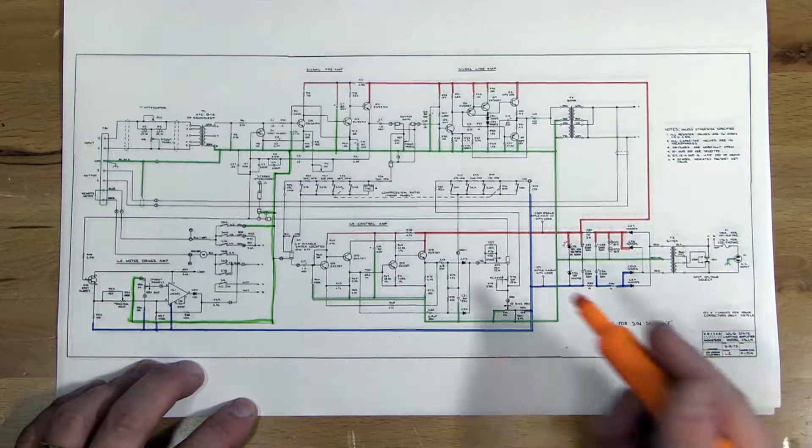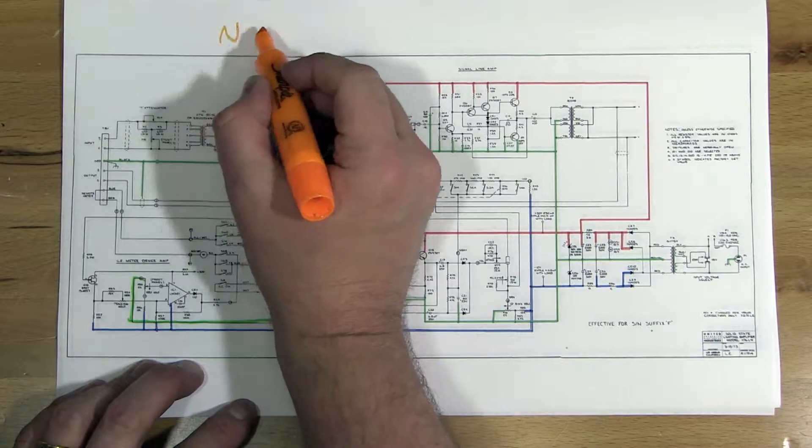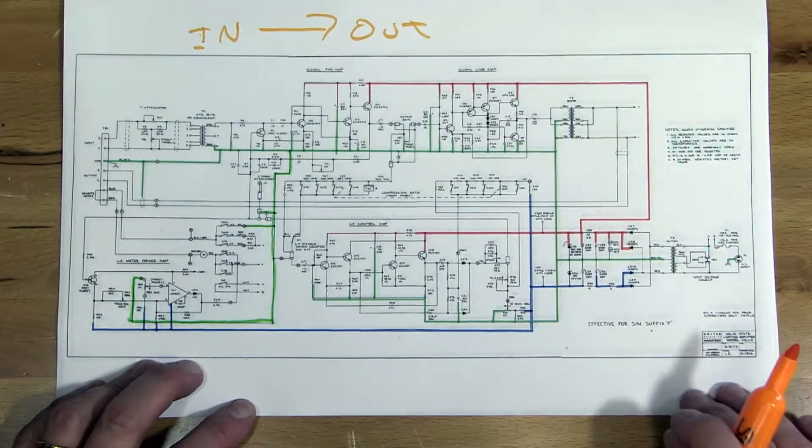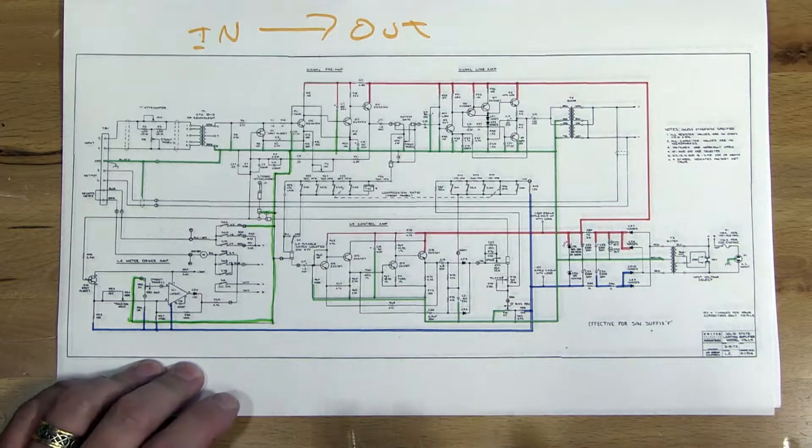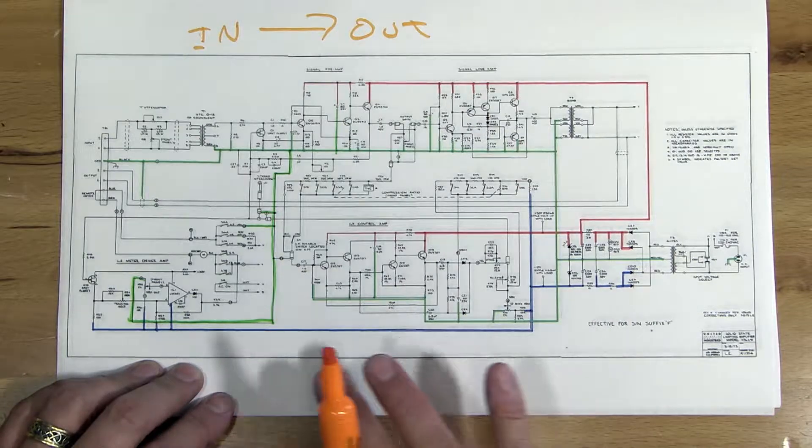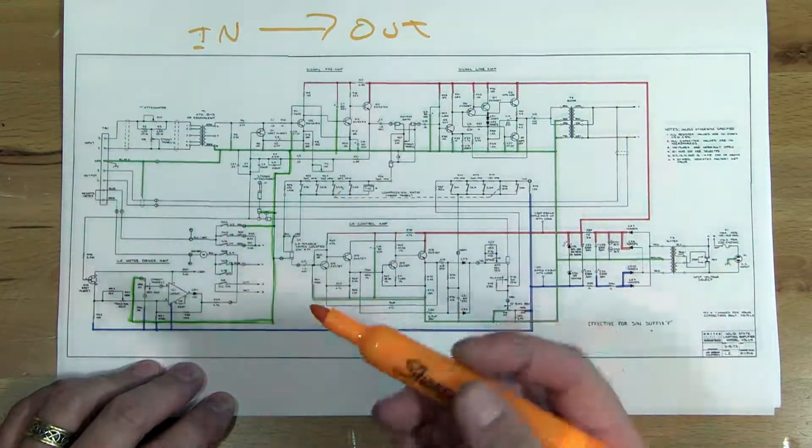So we started our input. We're basically just going input to output. And in this case it's a limiter, a compressor, so we also have a sidechain path that we'll do separately. But first just the signal path input to output. I'm gonna use orange for that.